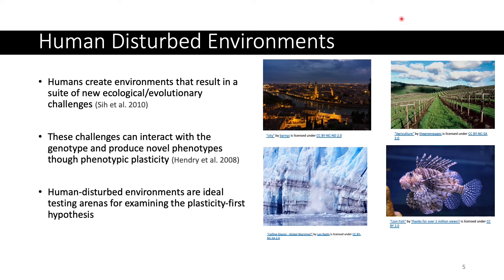These challenges can interact with a genotype to produce phenotypes that have not been exposed to selection. So when we think about how human environments are driving the evolution of populations, they're potentially doing so on variations of phenotypes that they themselves are triggering the release of. This makes human-disturbed environments ideal testing arenas to test our understanding of the plasticity-first hypothesis.